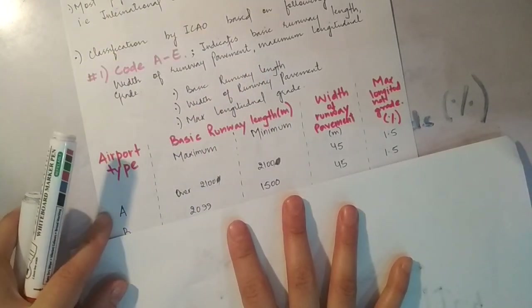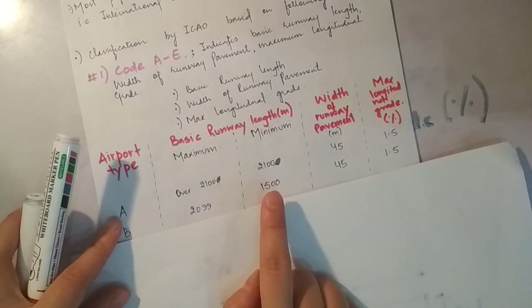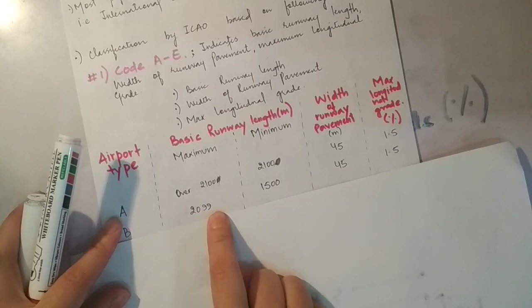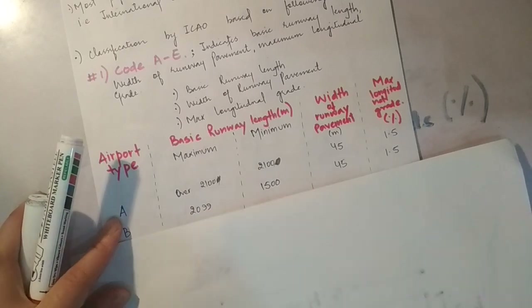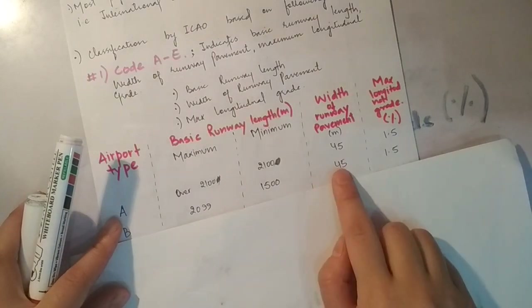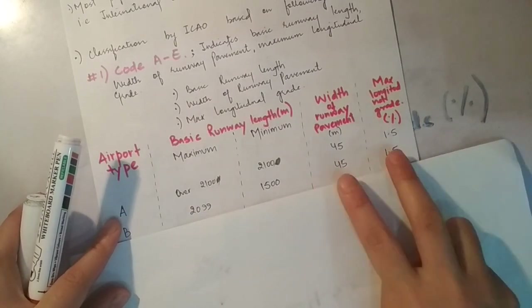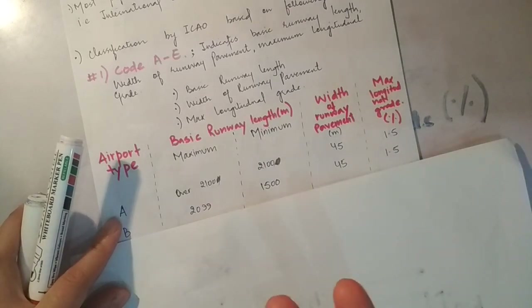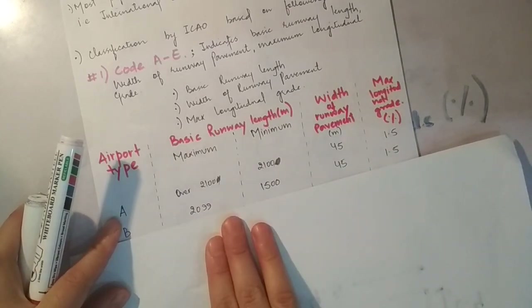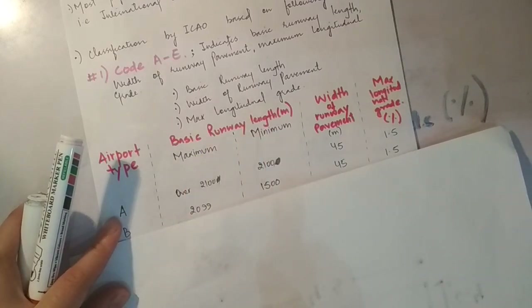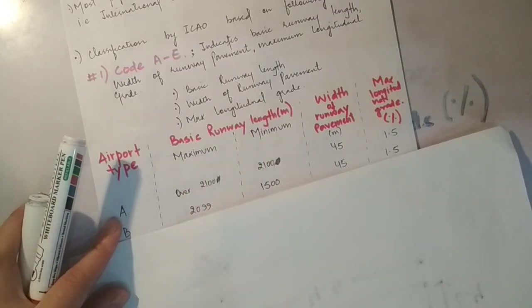Type B airport में जो runway की length है, it should range between 1500 meters to 2099 meters। यह देखने के बाद बोलना है that this is a Type B airport. यहाँ पर width of the runway pavement और maximum longitudinal grade same हैं जो Type A airport का है। इससे हमारा determining factor of classification on the basis of letters is the basic runway length — तभी आपको airport का type पता चलेगा।